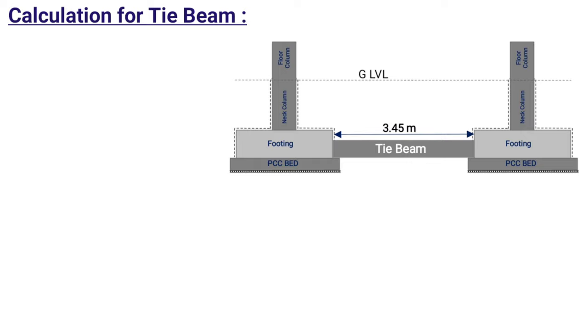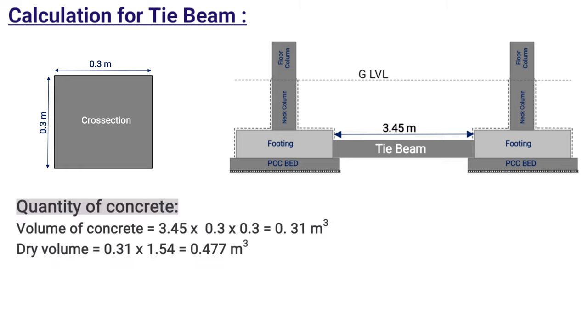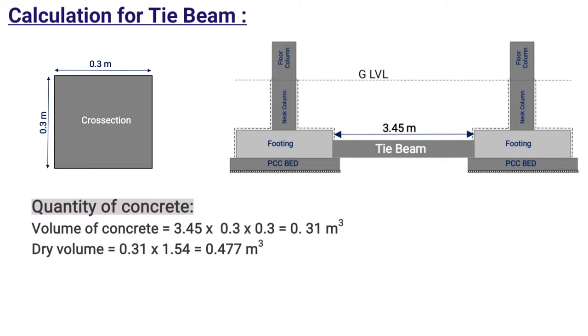Let's consider a tie beam of length 3.45 meter whose width and depth be equal to 0.3 meter. To calculate the quantity of concrete, we need to calculate the volume of concrete which will be equal to length, that is 3.45, times width which is 0.3 meter, times depth which is also 0.3 meter.